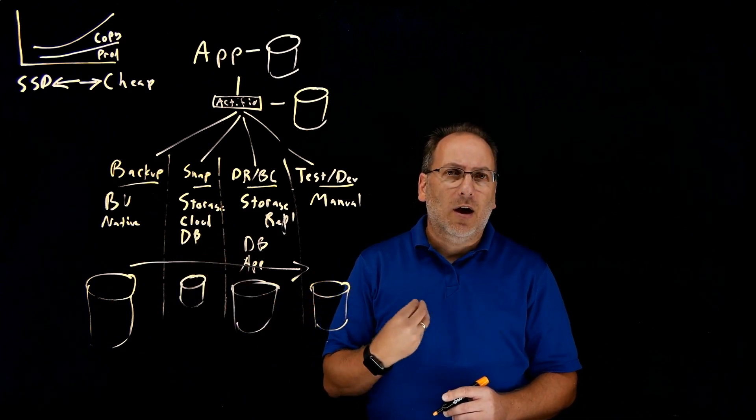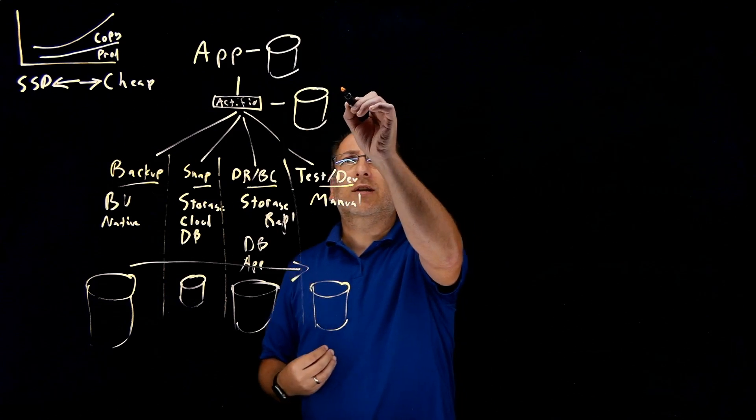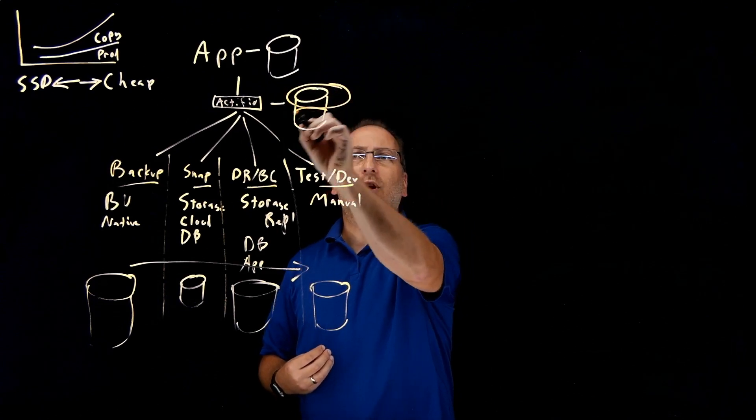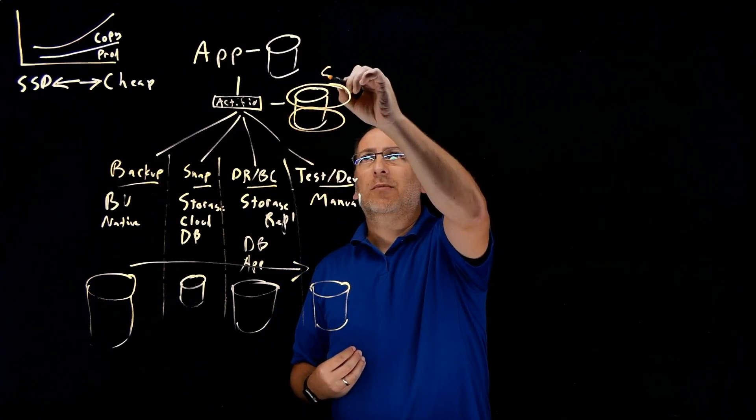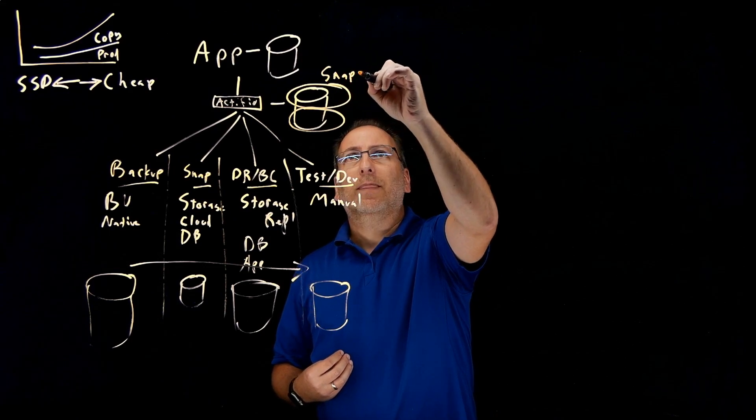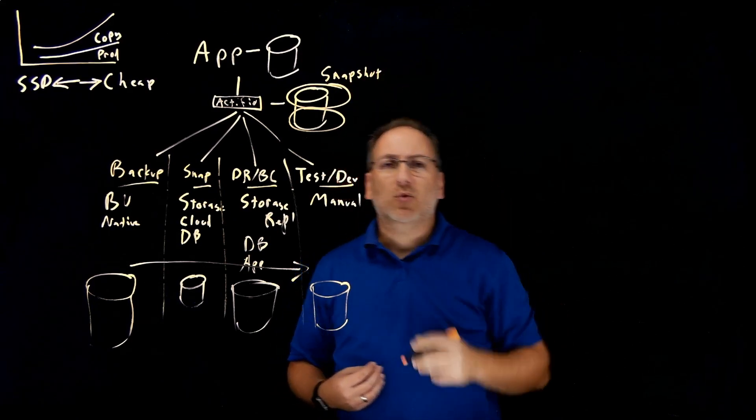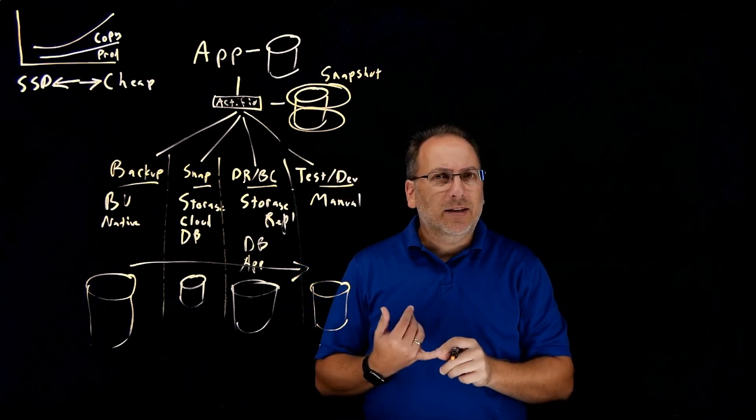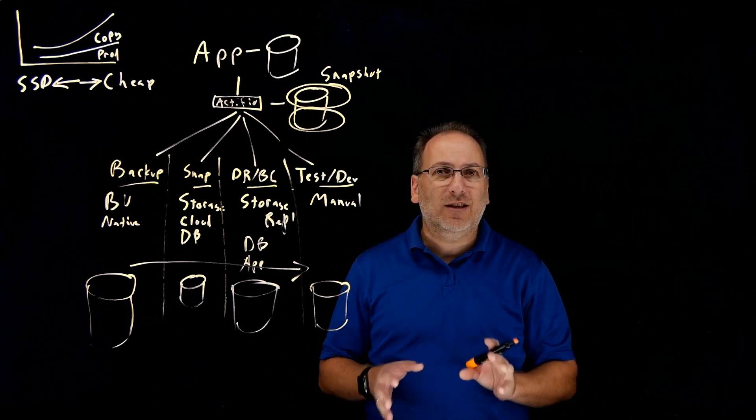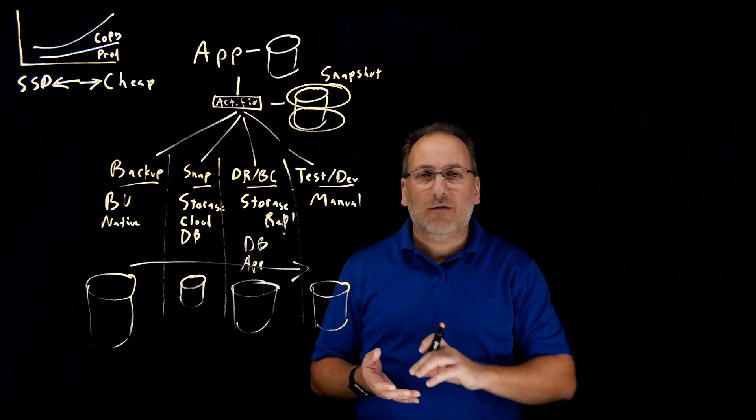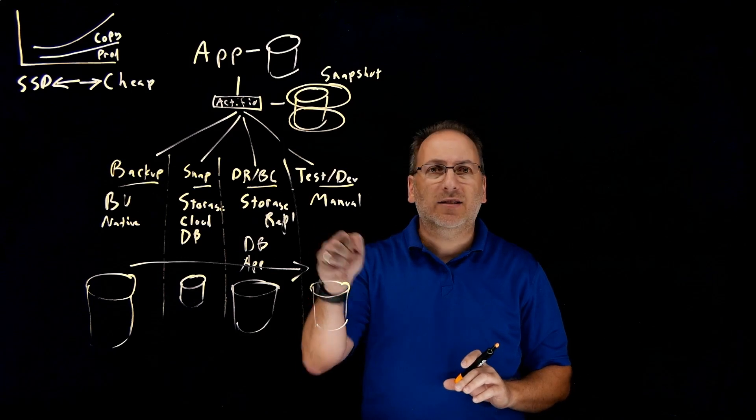So when we implemented our solution, we said we're going to need two different pools of storage to work with. One of them is going to be a snapshot pool, and this pool is where we're going to store data that needs to be immediately accessible with high performance for any use case that you might need, from disaster recovery to simple restores, to test and development reasons.